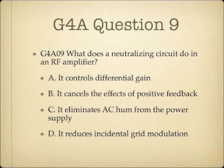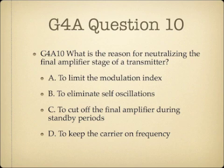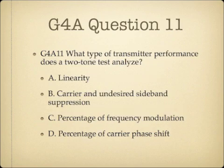Question 9: What does a neutralizing circuit do in an RF amplifier? A, it controls differential gain; B, it cancels the effects of positive feedback; C, it eliminates AC hum from the power supply; or D, it reduces incidental grid modulation. Question 10: What is the reason for neutralizing the final amplifier stage of a transmitter? A, to limit the modulation index; B, to eliminate self-oscillations; C, to cut off the final amplifier during standby periods; or D, to keep the carrier on frequency. Question 11: What type of transmitter performance does a two-tone test analyze? A, linearity; B, carrier and undesired sideband suppression; C, percentage of frequency modulation; or D, percentage of carrier phase shift.